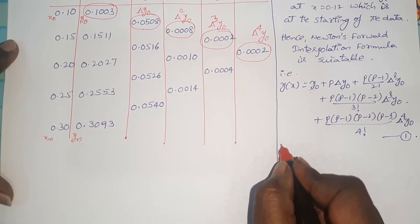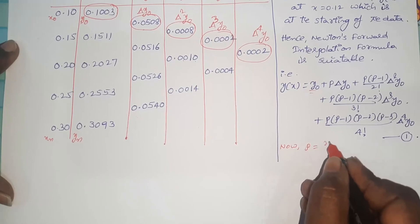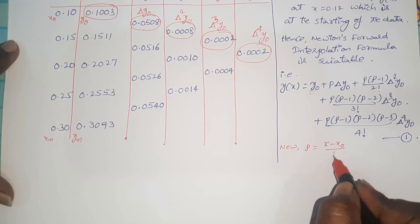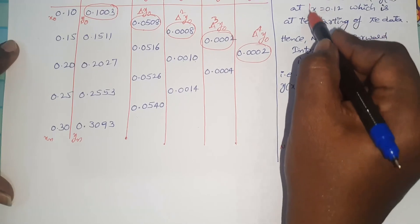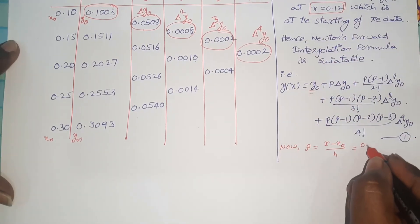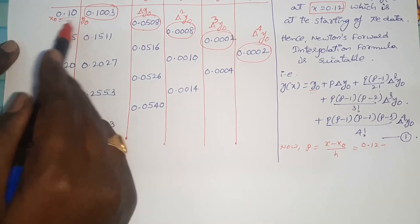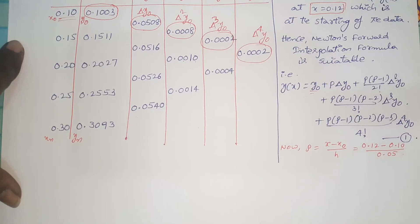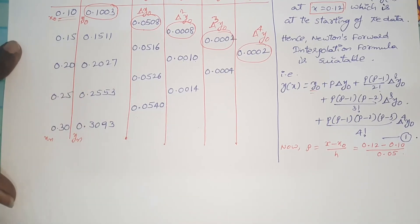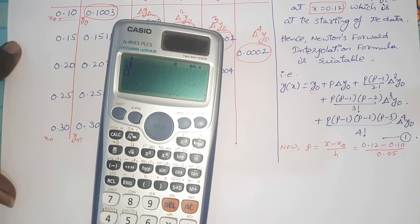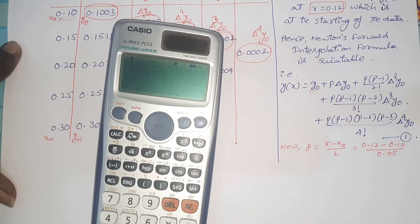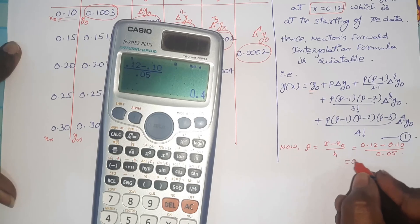Now I will find p. In Newton's forward interpolation formula, p = (x − x0) / h. Here x = 0.12, x0 = 0.10, and h = 0.05. So p = (0.12 − 0.10) / 0.05 = 0.02 / 0.05 = 0.4.